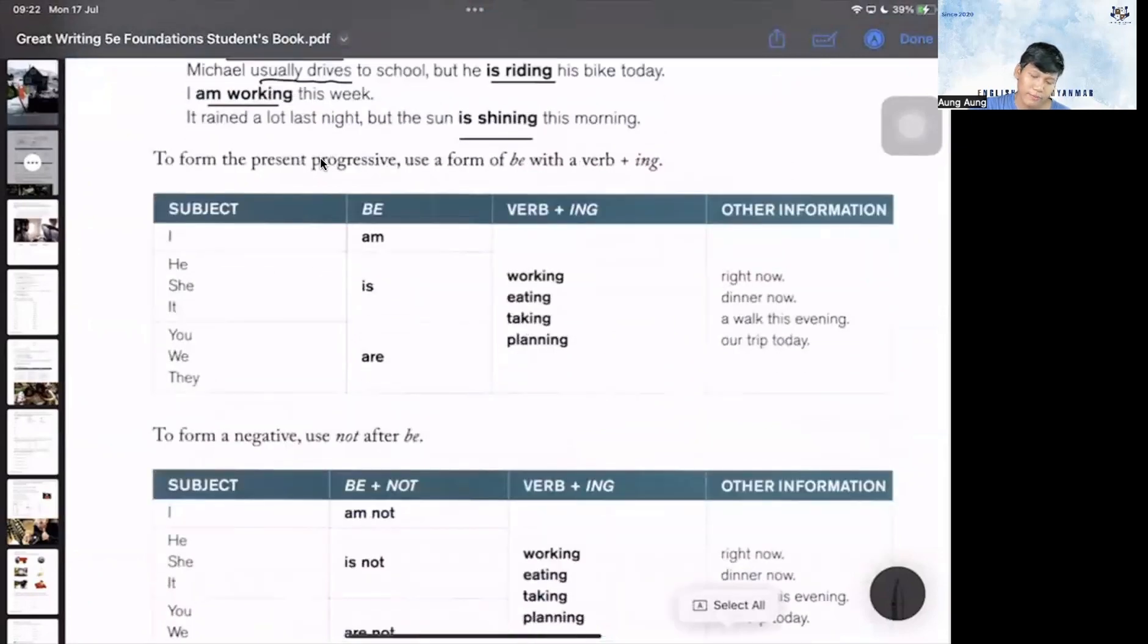Present progressive structure. I am, he, she, it is, we. I am working right now. He is eating dinner.